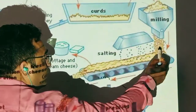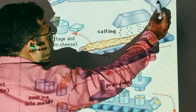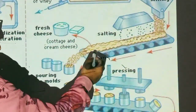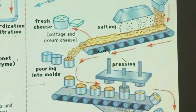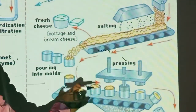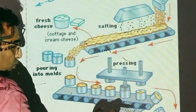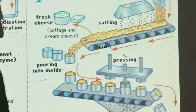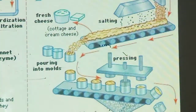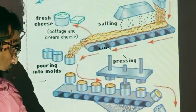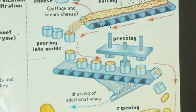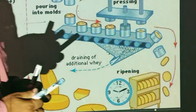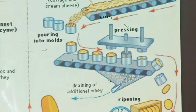The solid curds are broken into small particles using a milling machine. They are then processed into molds, and the last step is ripening and maturation before the cheese can be sold on the market. This is how cheese is formed.